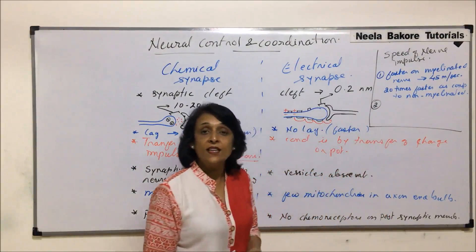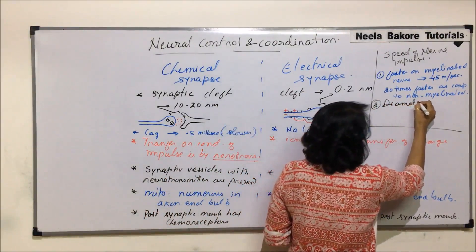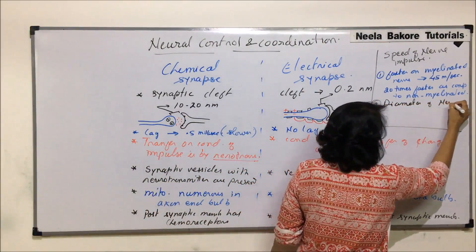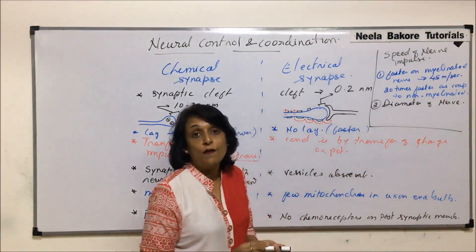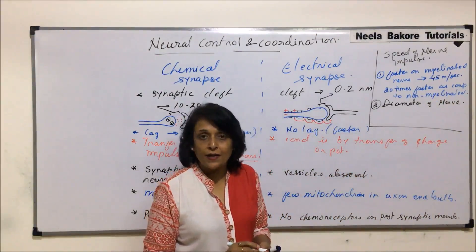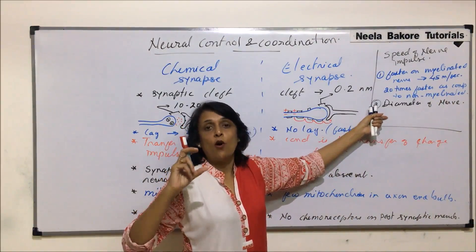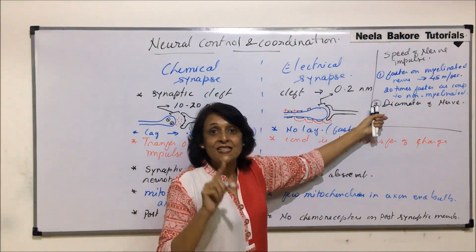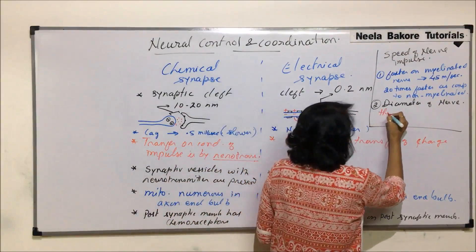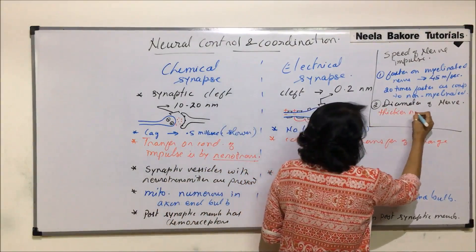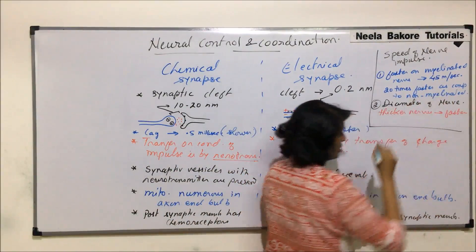On non-myelinated nerves, charges move in smaller loops from one point to the next, whereas on myelinated nerves the impulse covers greater distance between nodes. The second factor controlling speed is the thickness or diameter of the nerve fiber. Thicker the nerve, faster is the rate of conduction, because the wider the nerve, the less is the resistance.